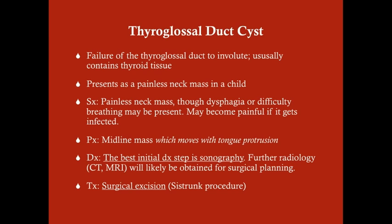On the USMLE, and to differentiate the thyroglossal duct cyst from other neck cysts, it's important to know that this is a roughly midline mass, and most importantly, that it moves with tongue protrusion. How do you remember that? Thyroglossal—'glossal' means tongue, from a Greek derivation. So thyroglossal moves with tongue protrusion, and that's the best way to diagnose it on physical exam. You ask the child to stick their tongue out, and you'll see the mass move dramatically.